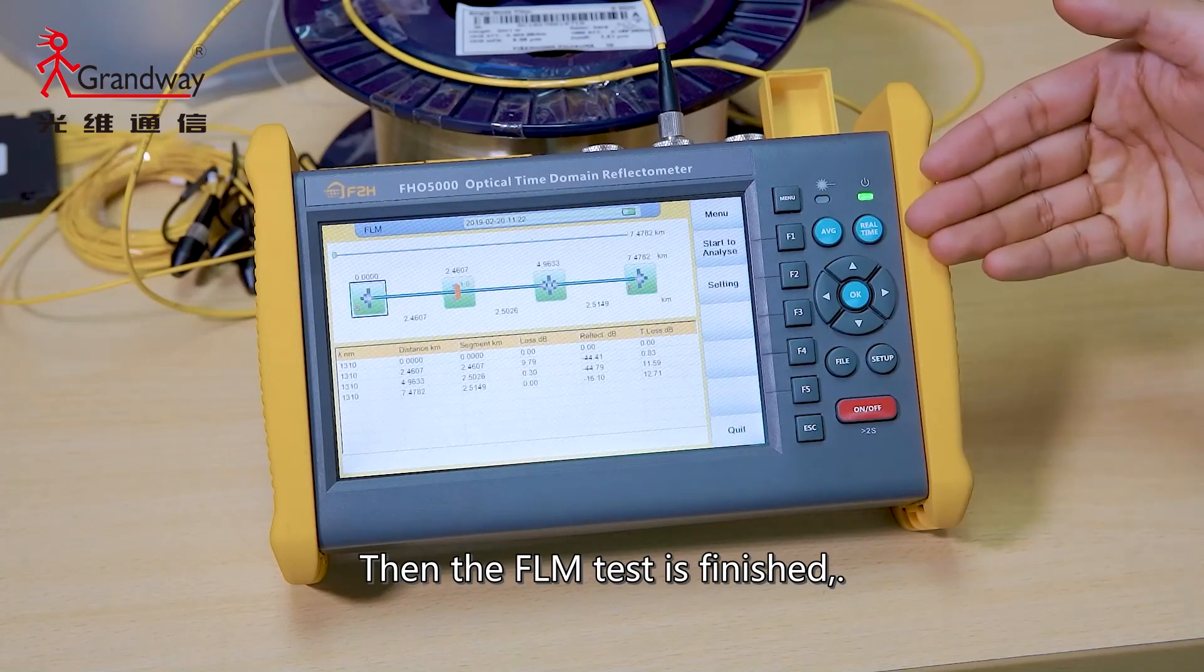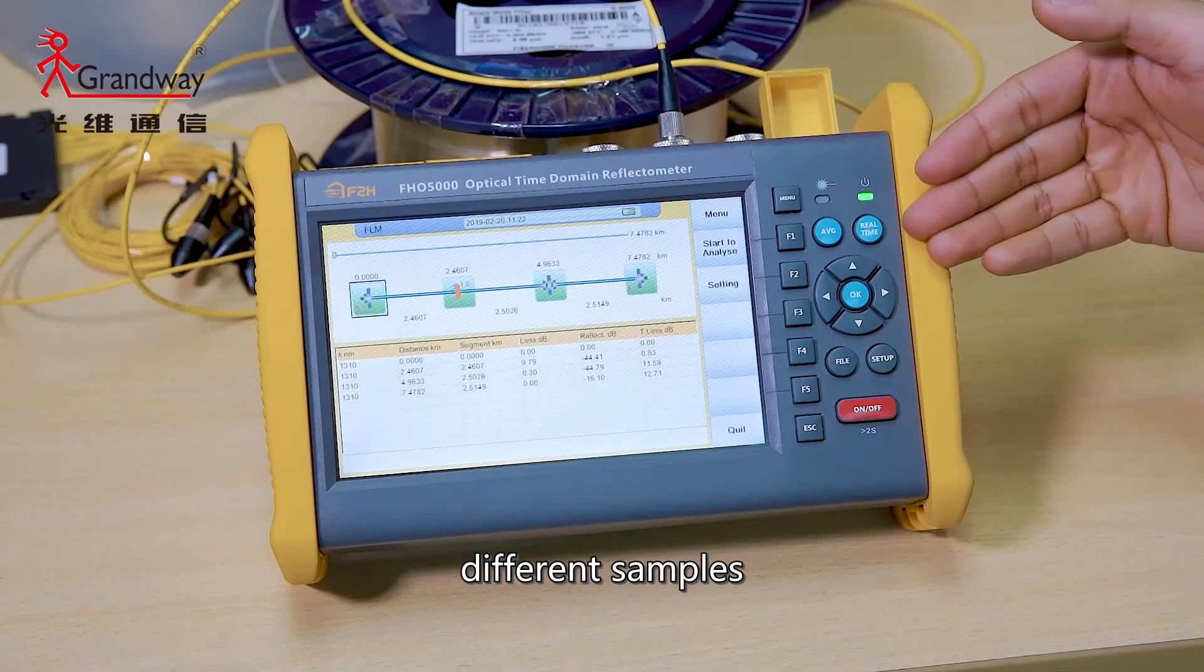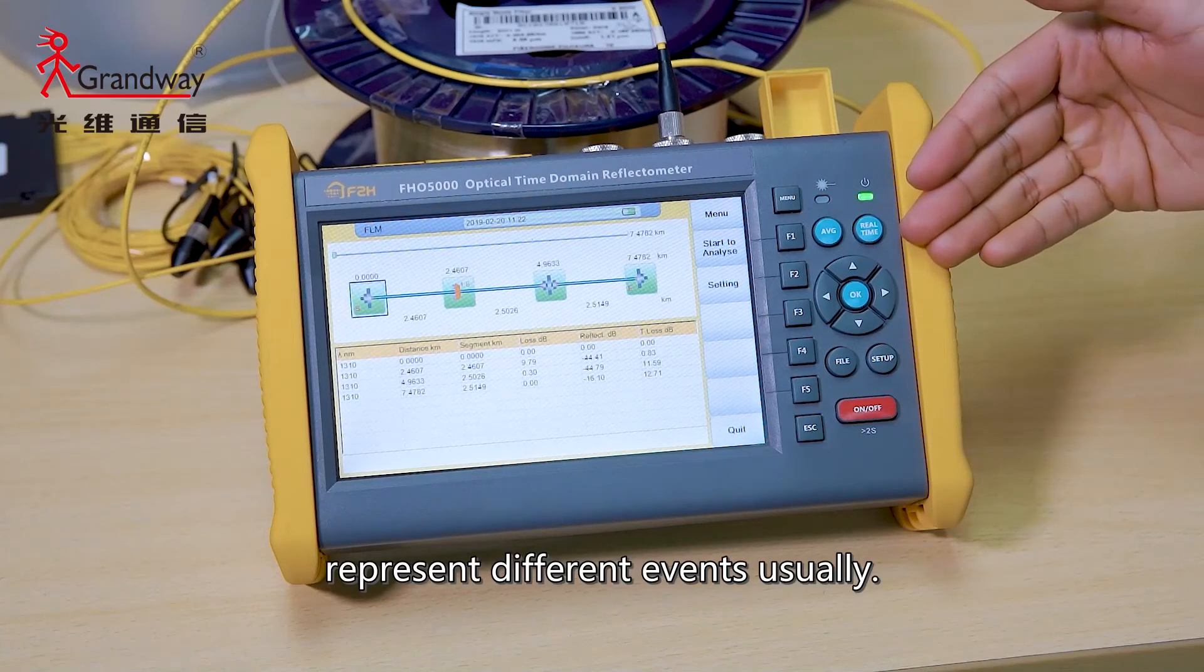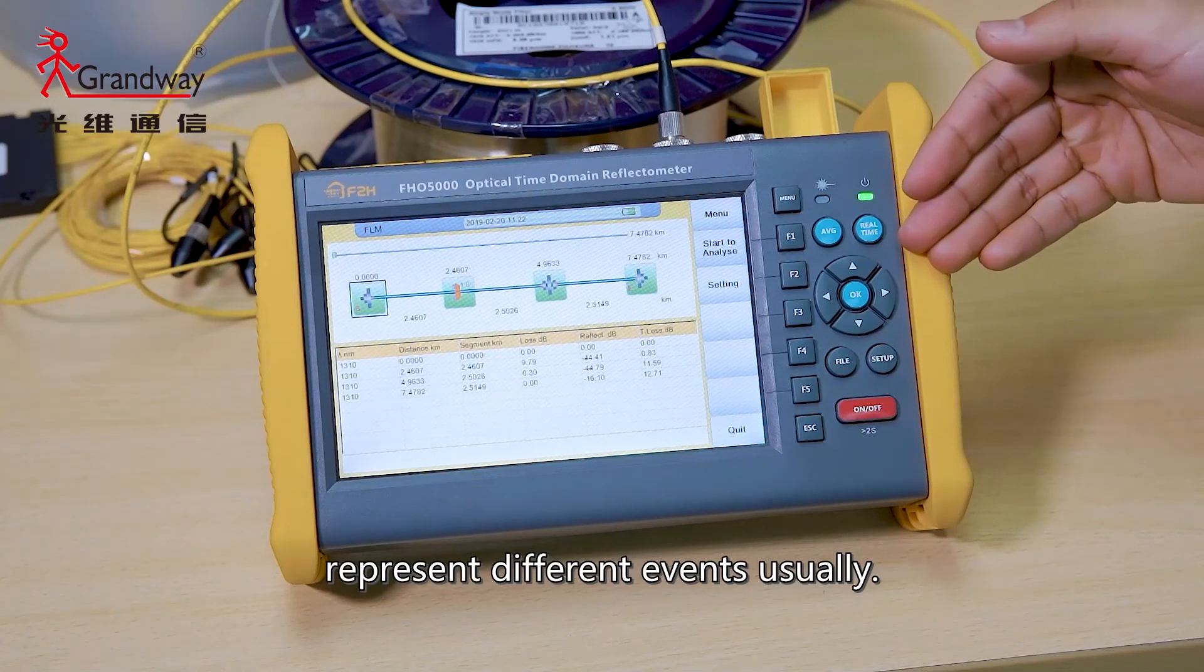Then, the FLM test is finished. Different symbols represent different events visually.